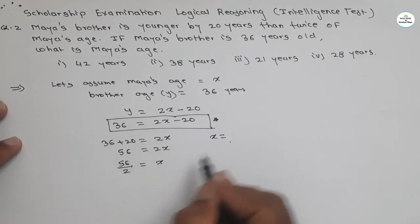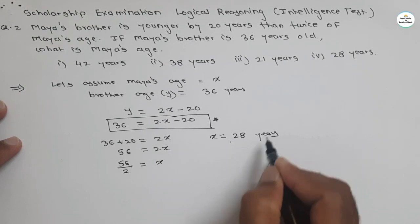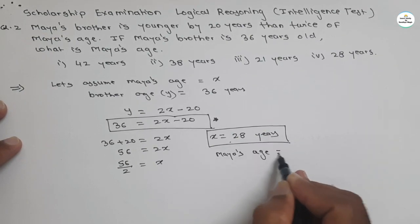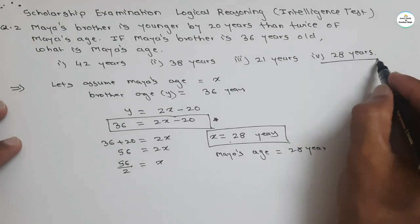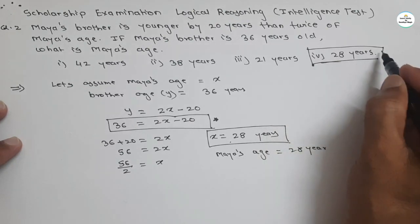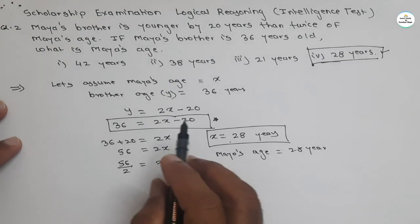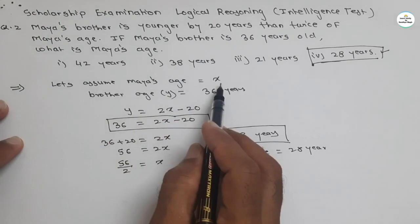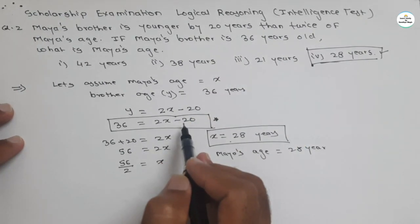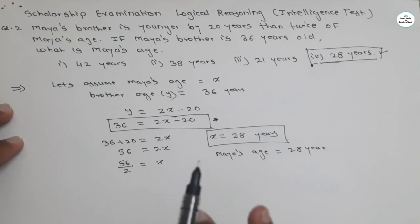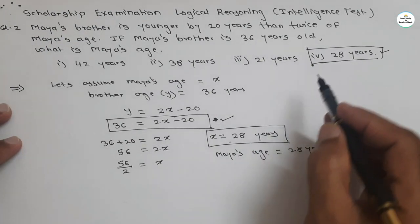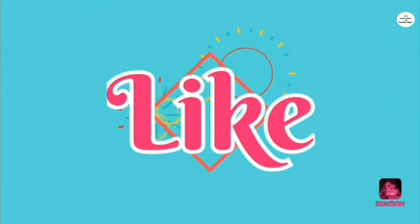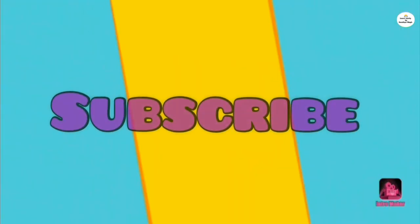Then x = 56 ÷ 2 = 28. So Maya's age is equal to 28 years, and the fourth option — 28 years — is the correct answer. Just concentrate and first derive the equation; with the help of assumed variables and the data given, deriving the equation makes it very easy to calculate the required answer. This is all for this video — we will meet again in our next video. Do learn, do enjoy, thank you.